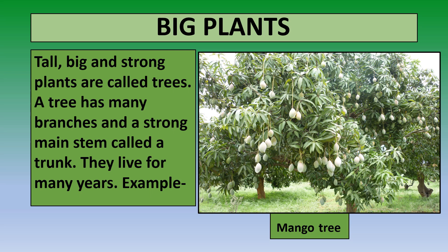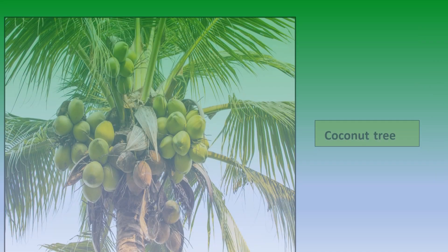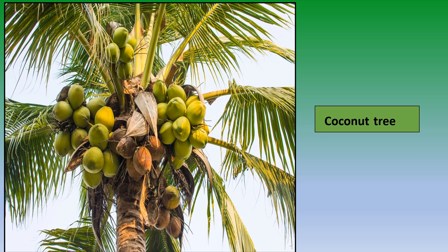And has many branches. Now let's have a look at some more examples of big plants, which are also known as trees. The coconut tree is also an example of a big plant, as it is tall and strong.